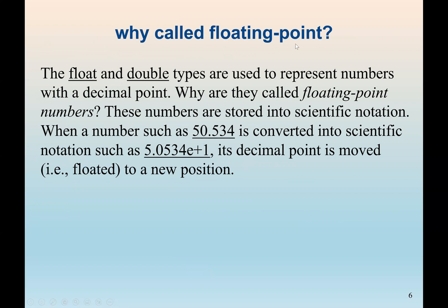Why are they called floating point numbers? Float and double types are used to represent numbers with a decimal point. They are called floating point because the numbers are stored in scientific notation. For example, 50.534 converts to 5.0534e+1 in scientific notation, because the decimal point is moved — or floated — to a new position.